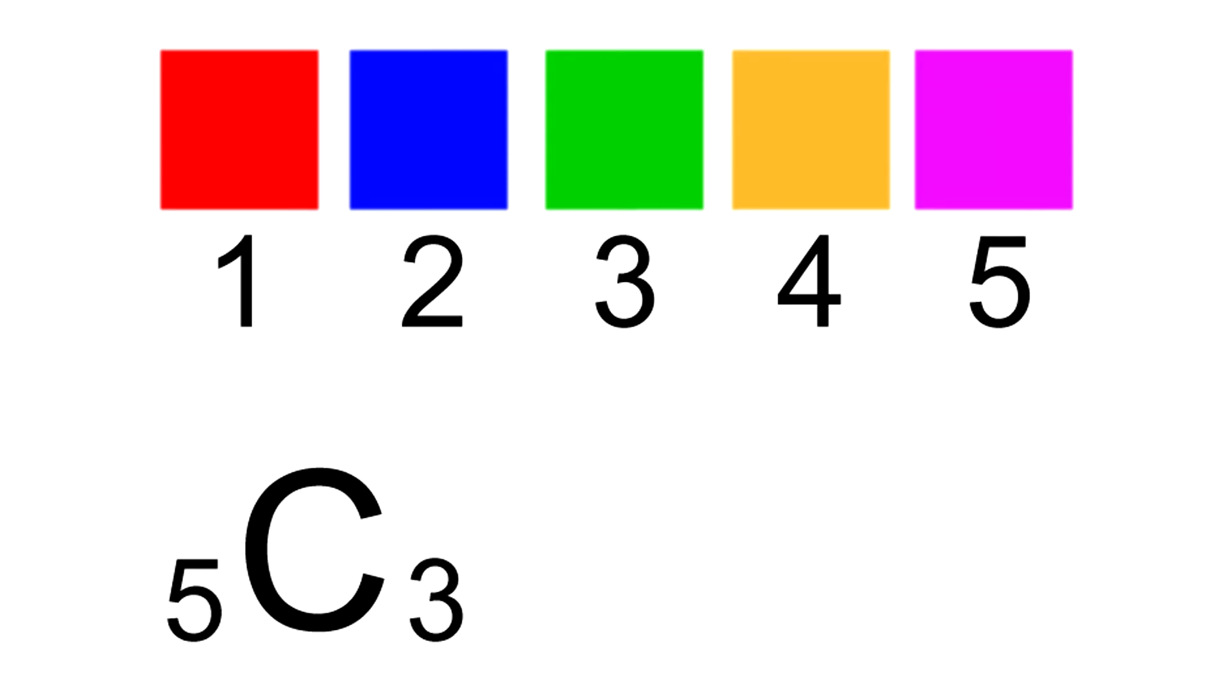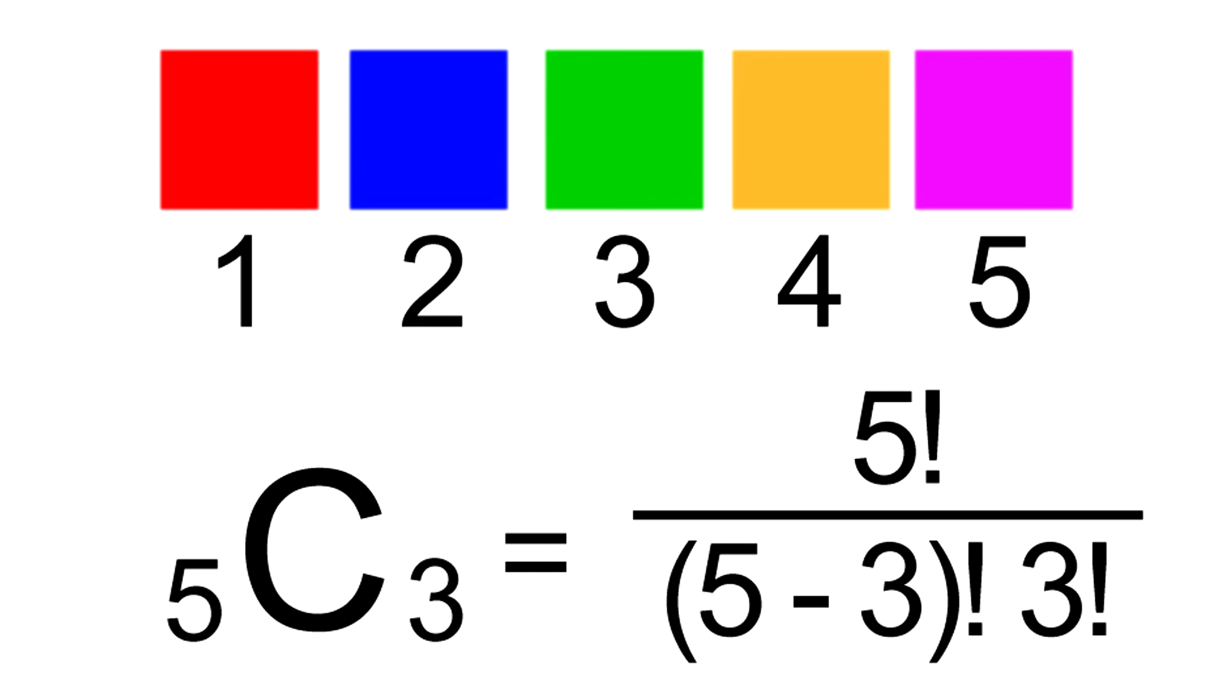So the combination notation is 5 choose 3. The combination formula is 5 factorial divided by 5 minus 3 factorial times 3 factorial.